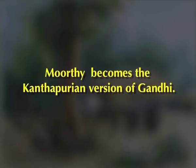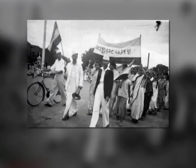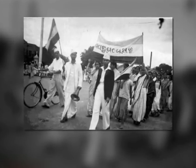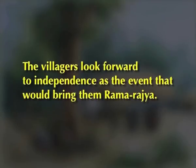Gandhi himself is not seen in the novel, but he is a presence hard to ignore. He is omniscient through his movements and the myths surrounding him. Moorthy is not just the mediator between Gandhi and Kanthapura — he also becomes the Kanthapurian version of Gandhi. He becomes an outcast while leading the villagers towards independence. The villagers look forward to independence as the event that would bring them Ramarajya, or the government run by a benevolent ruler.